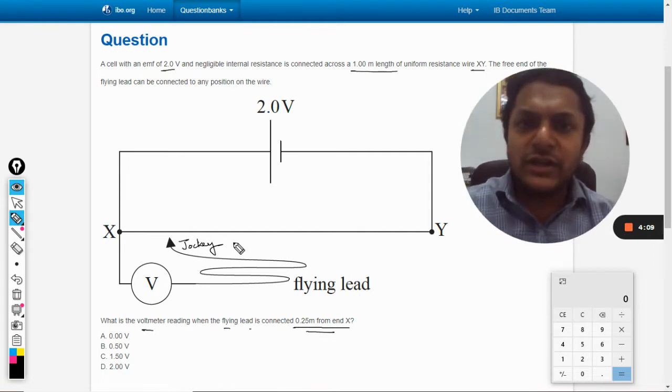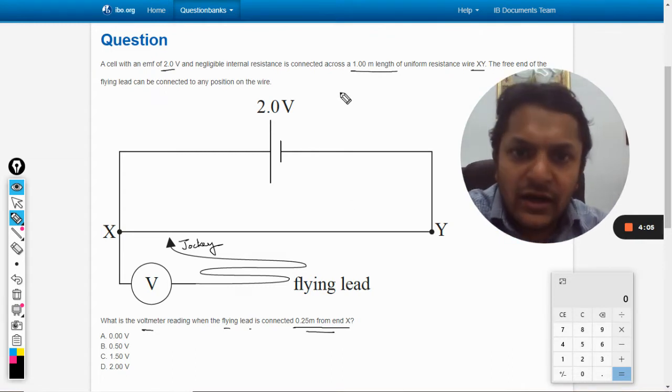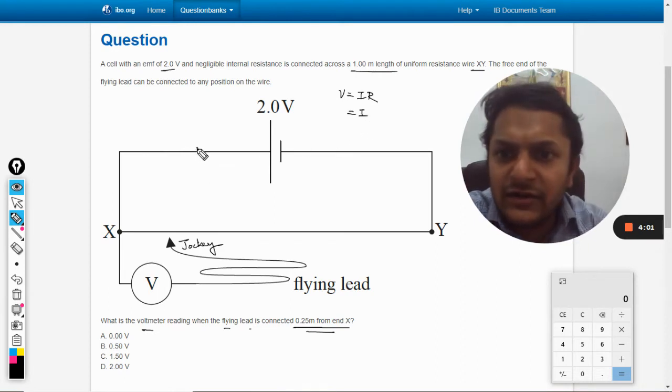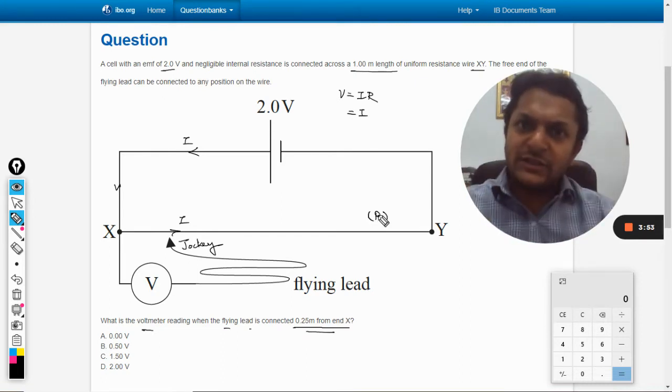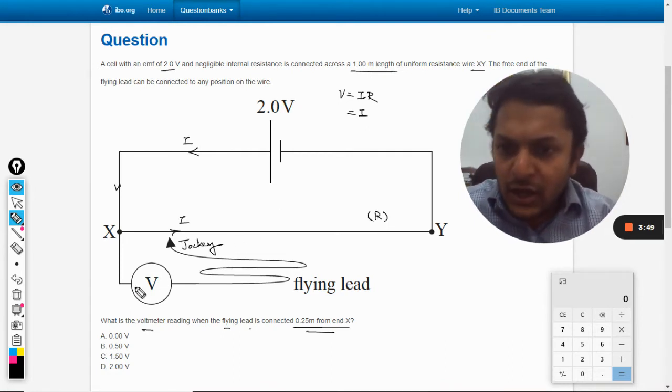In such questions, there is a concept that V is equal to IR, and R is given by... Current will be constant. There will be a constant resistance of this wire because there is a total length of wire. This voltmeter is ideal; it would be having infinite resistance.